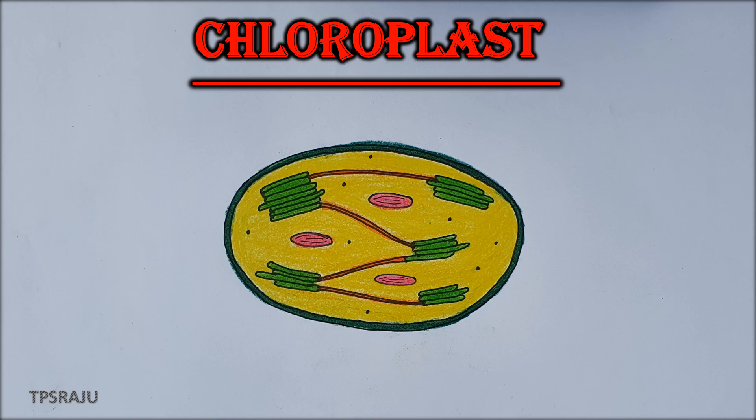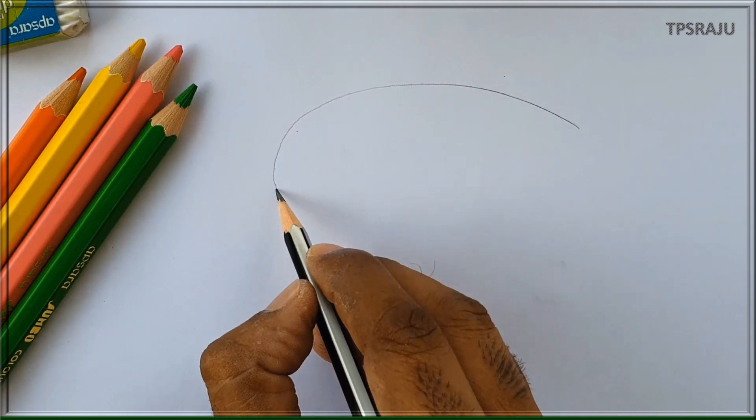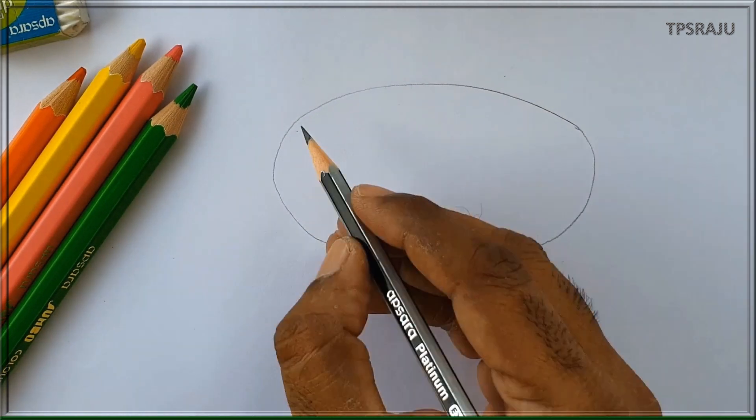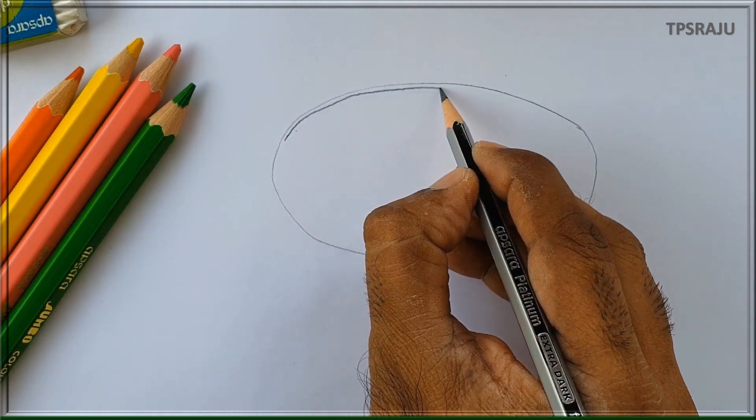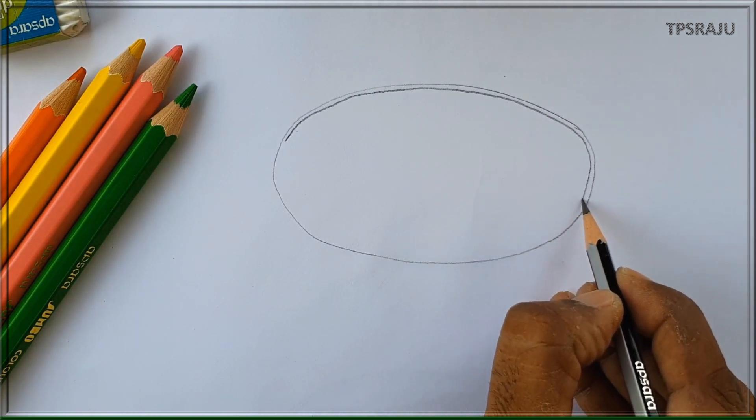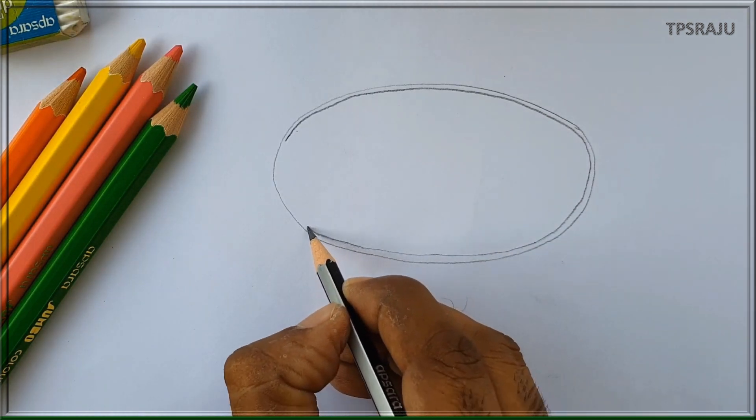These are specialized organelles present in the plant cells responsible for photosynthesis. Usually, these are in disc shape, surrounded by two layers, outer membrane and inner membrane.